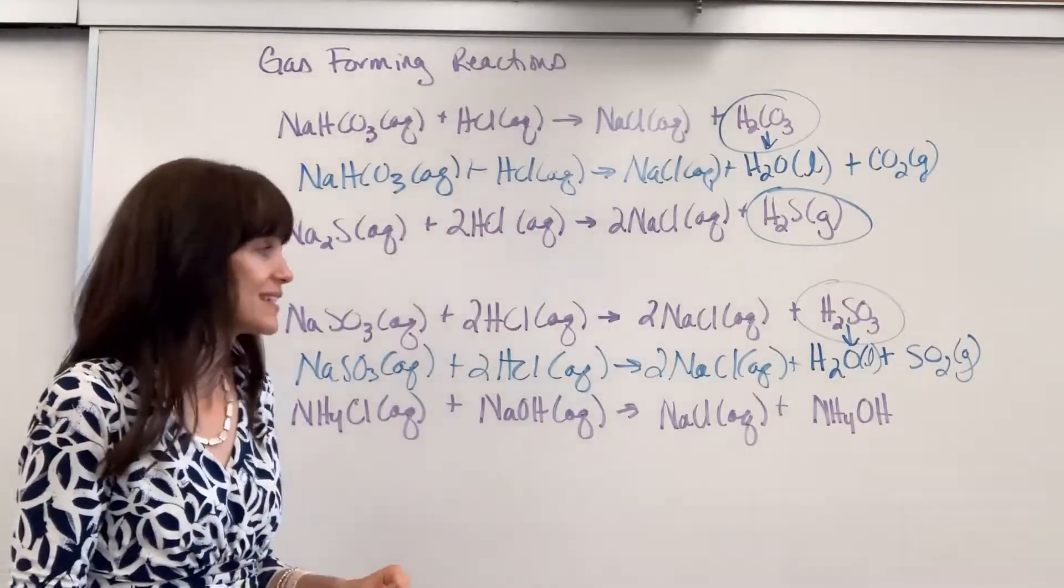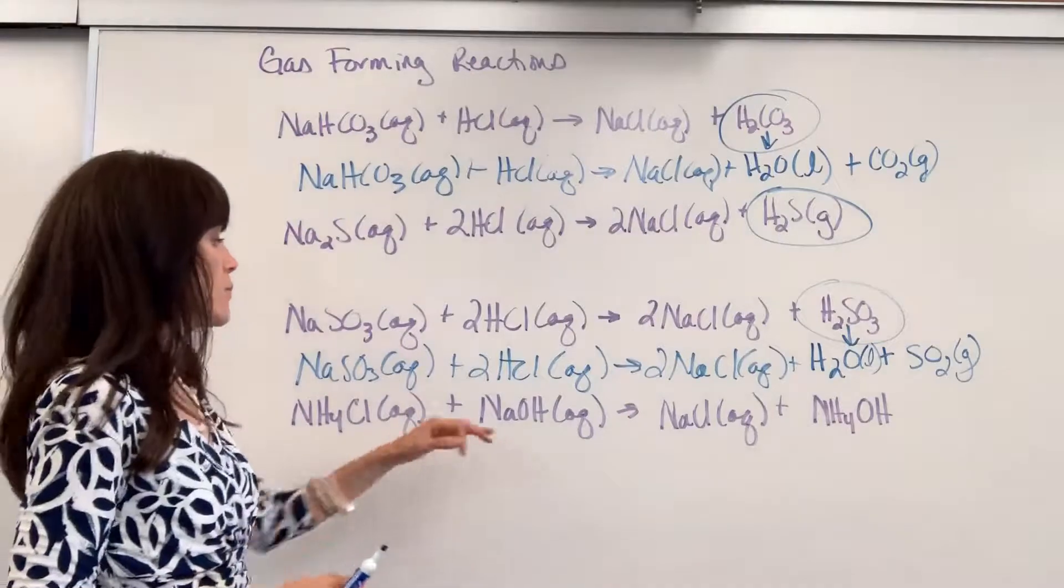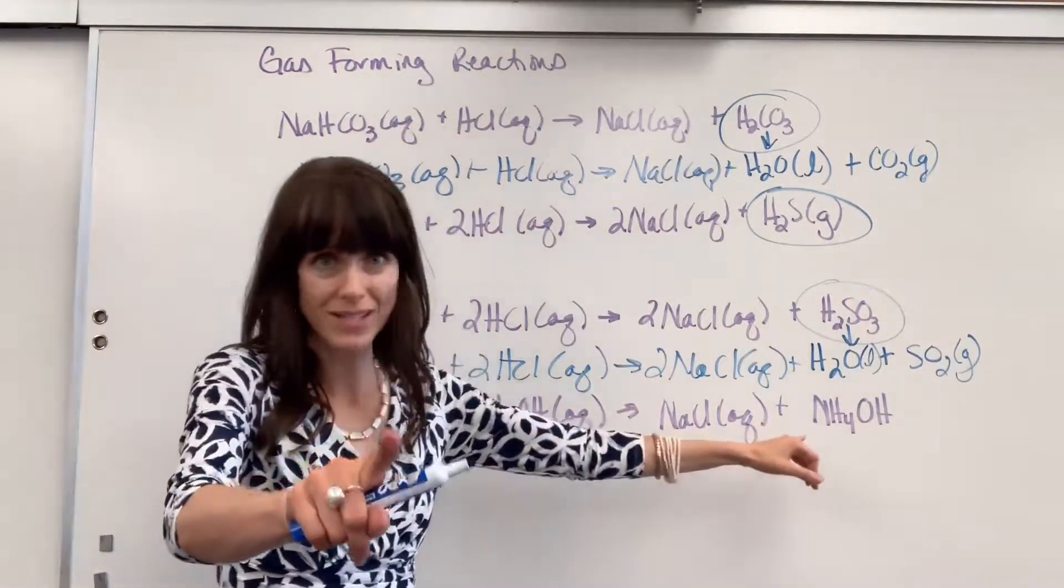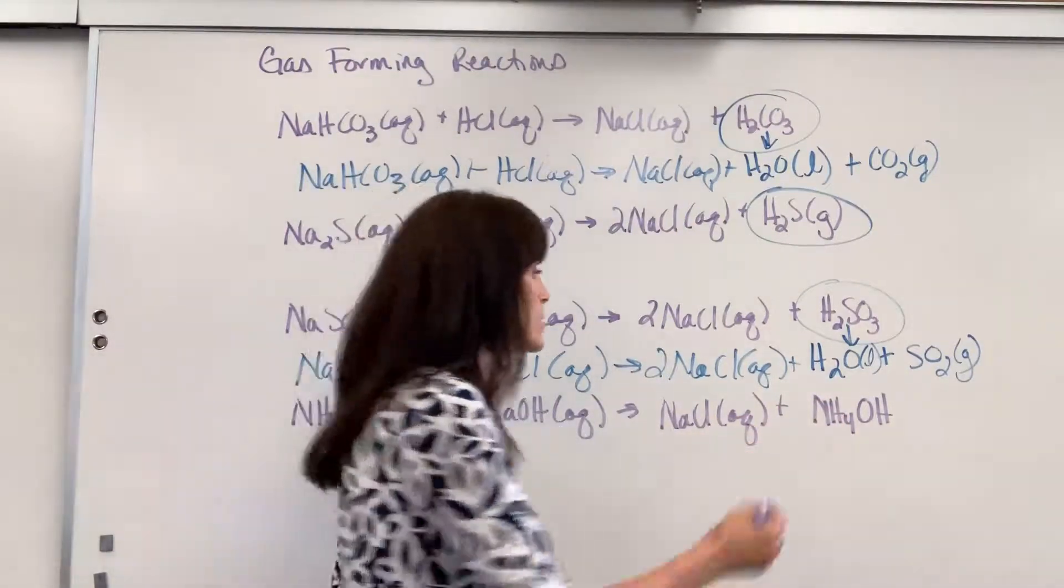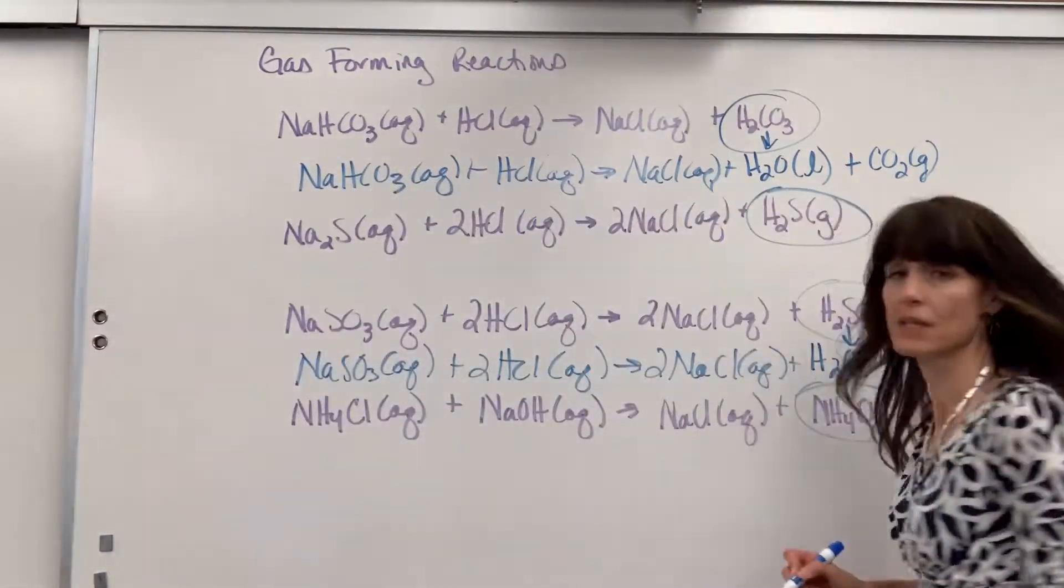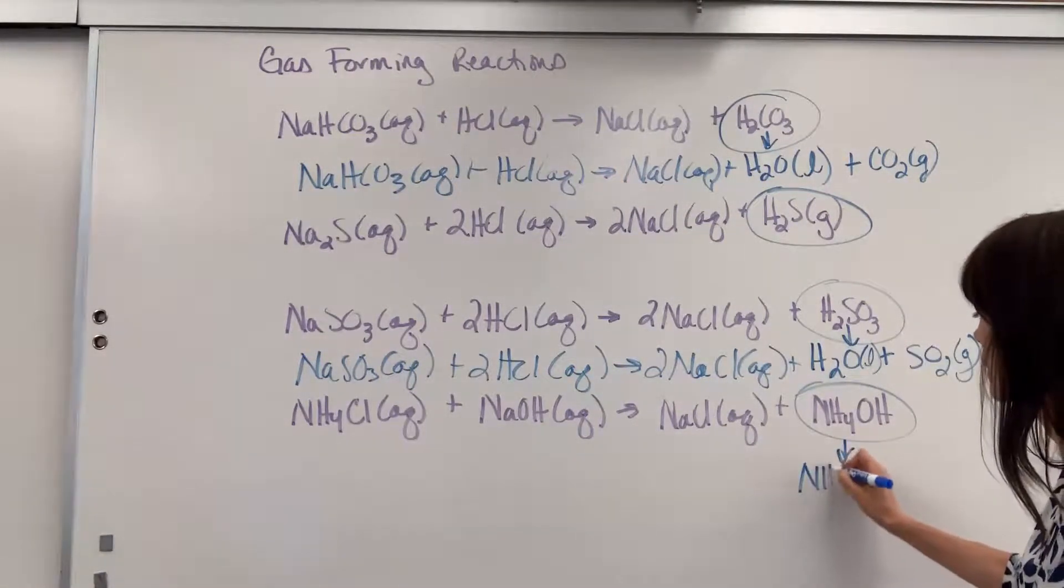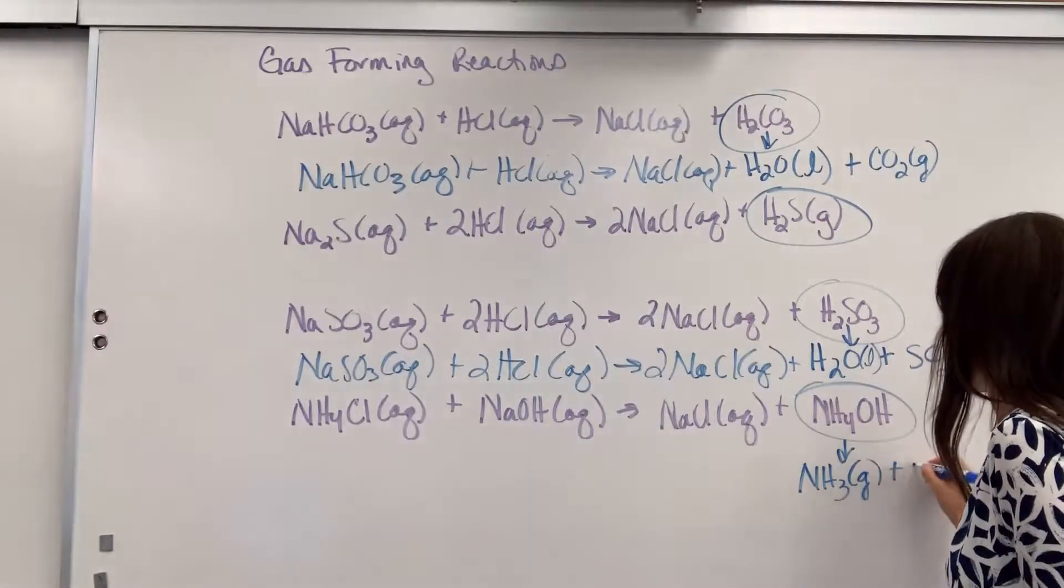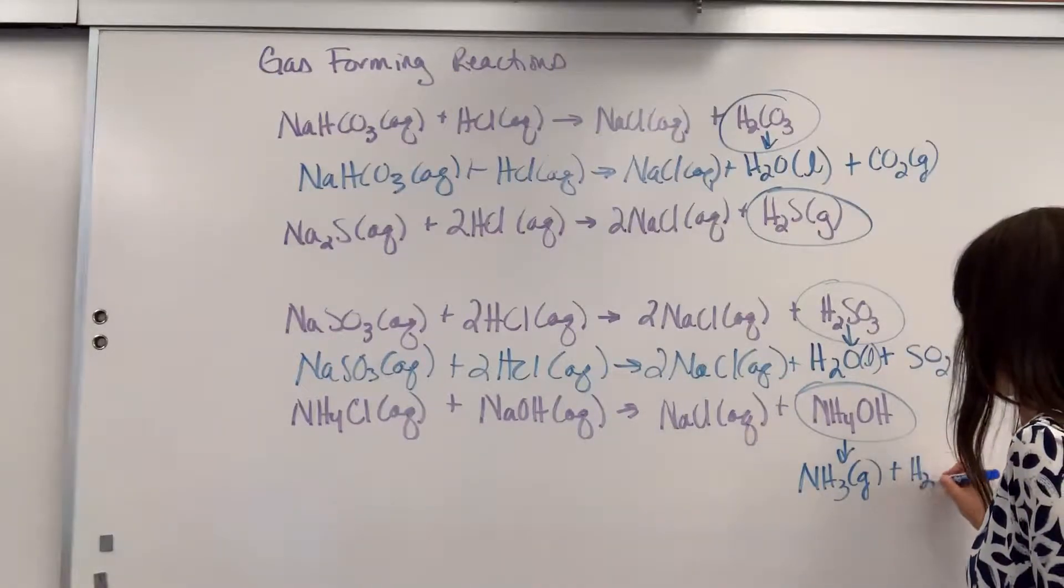Okay, last one that you've got to memorize is with ammonium. So, I have ammonium chloride plus sodium hydroxide yields sodium chloride, and here's what you memorize. Ammonium hydroxide. When you have ammonium hydroxide, that is going to produce ammonia gas plus its water, which is your liquid.